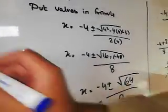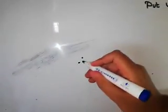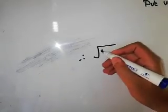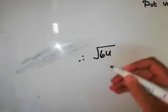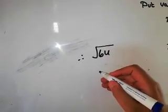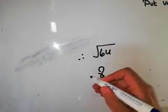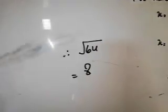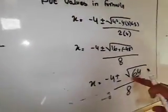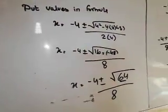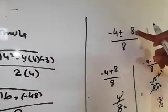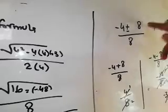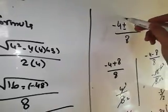Now you should know — as I am writing on the side — that under root 64, if you check on a calculator, equals 8. So in place of √64 we simply write 8. Under root 64 is equal to 8.